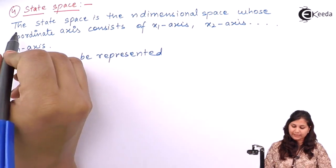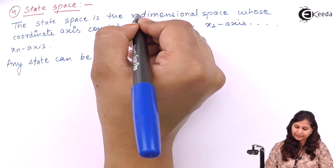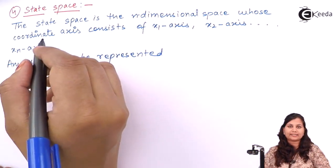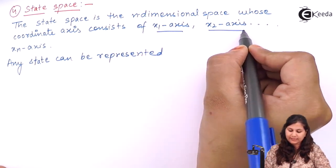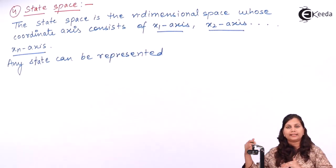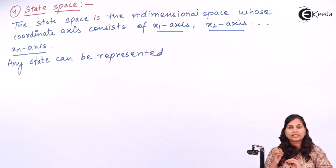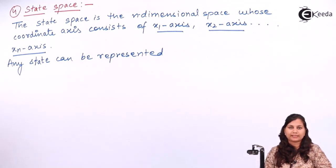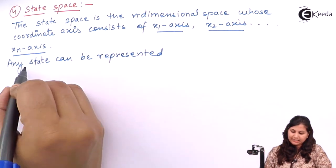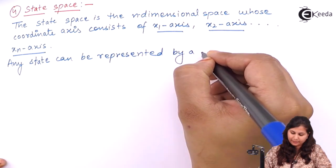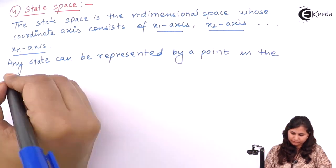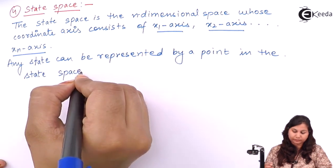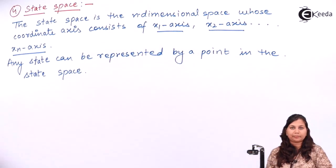State space is the n-dimensional space whose coordinates are x1, x2, through xn — the state variables. For each state variable we have an axis, and when we combine all these axes we get the complete n-dimensional space, which is known as the state space. In this space, any state can be represented by a point.